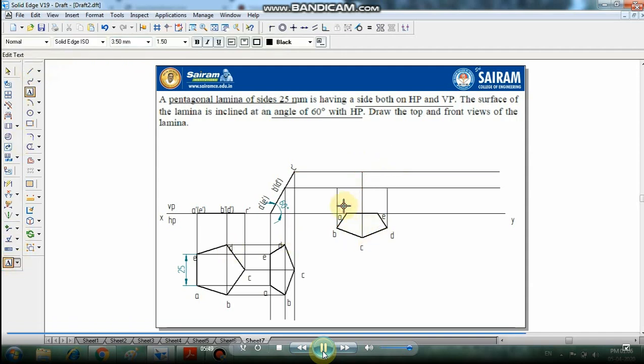Label the points: a and e are already there, so mark a dash e dash. Then d dash, c dash, and b dash.